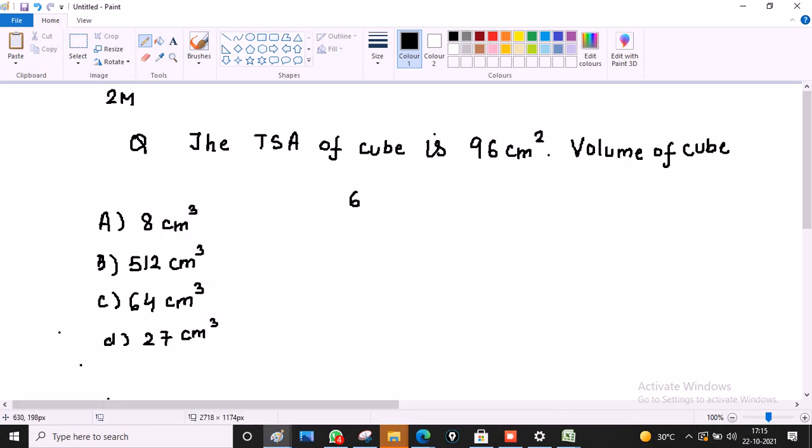The total surface area is 6A square, this is equal to 96. 96 by 6 we divide, so we have 16. And square root of 16 is 4.